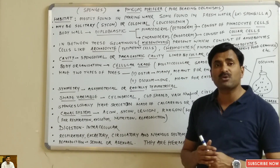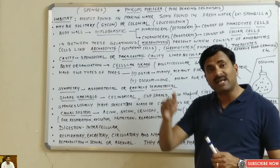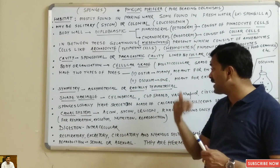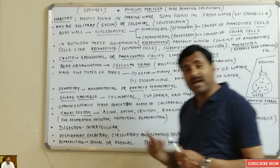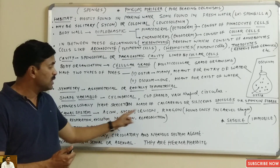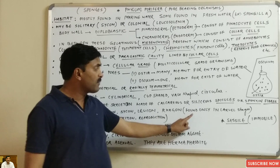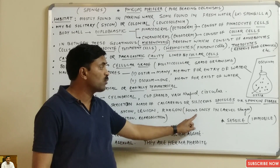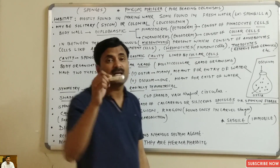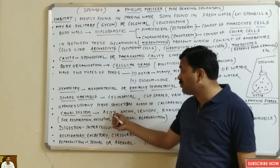A very peculiar and important feature of porifers is the presence of the canal system. Through this canal system, water enters the body, and it is important for respiration, excretion, nutrition, and reproduction. These canal systems are basically of four types: ascon, sycon, leucon, and rhagon. The rhagon canal system is found only in larval stages. The ascon type is the most simple canal system.